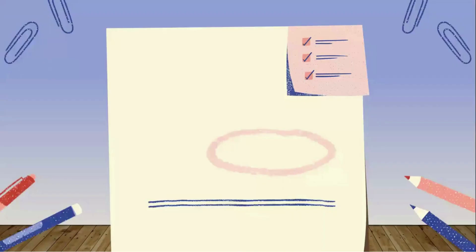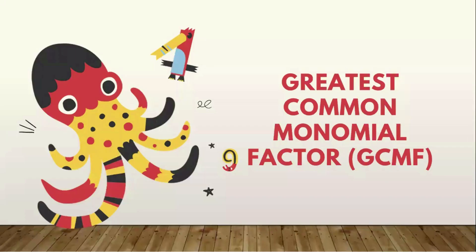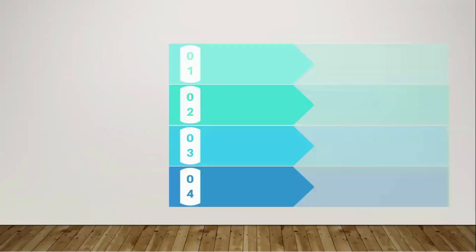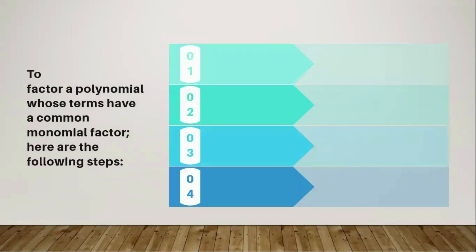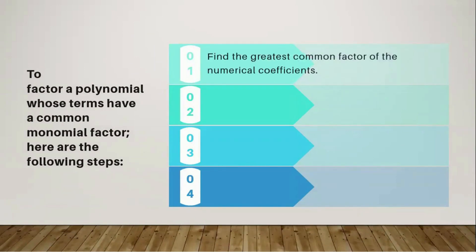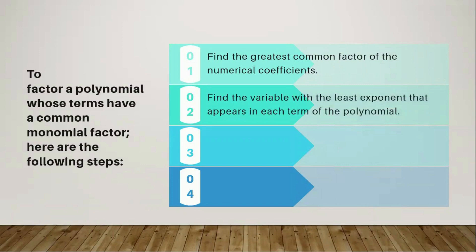Now let's proceed to our lesson. Our lesson for today is all about the greatest common monomial factor. I will give you the steps to factor a polynomial whose terms have a common monomial factor. Step one: find the greatest common factor of the numerical coefficients. Step two: find the variable with the least exponent that appears in each term of the polynomial.